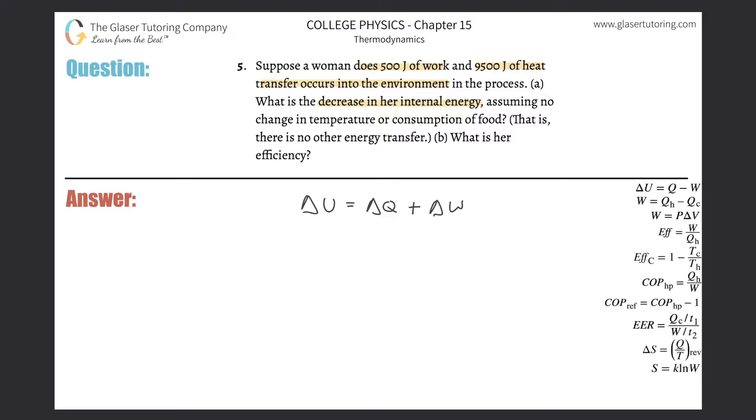If I want to find the decrease in internal energy of a particular system, then I better know the change in heat energy of that system and the change in work energy basically of that system. Now all I have to do is basically just plug in the values with the appropriate signs, and that's where the table in question number two comes in handy. Change in internal energy is equal to change in heat energy. It says that 9,500 joules of heat transfer occurs into the environment. Well, if it goes into the environment, where did that energy come from? It came from the woman. So the woman's losing that amount of heat energy. So that's why it's negative 9,500. Heat is being removed from that particular system, and the woman in this case is the system.